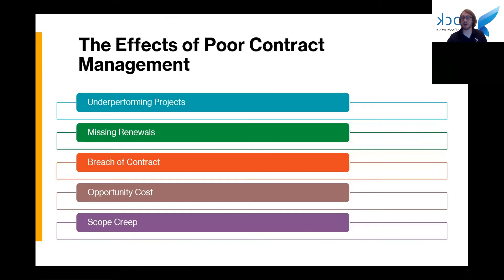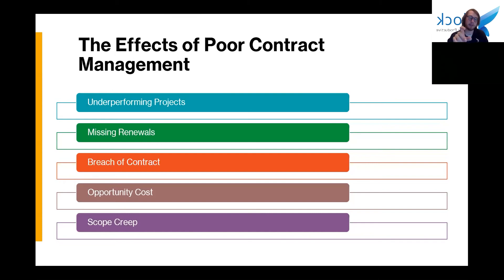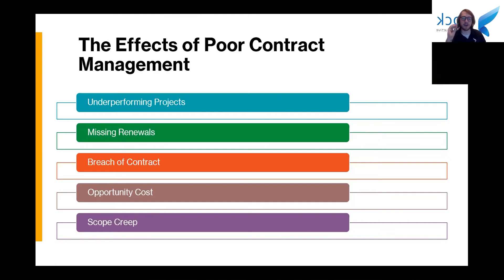Some of these issues include underperforming projects, where work might not be delivered due to contracts not being closely monitored. You can have situations where people on your side are failing to deliver on deadlines, but you also have situations where you're working with a contractor or third-party company who isn't delivering what they're supposed to, and since you're not monitoring the contract, you don't know that. They may have promised a specific task, but because it seems minor, you overlook it — and that means you're not getting what you're paying for.